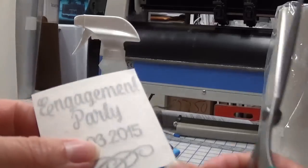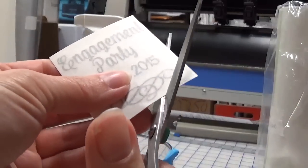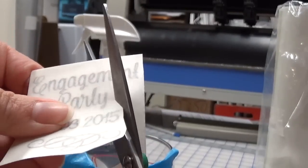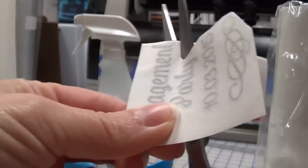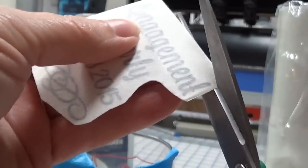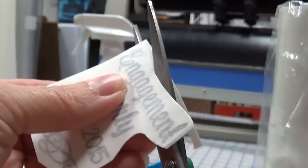When you get your decal, since we're going on a curved surface, I'm going to go ahead and trim this as close as I possibly can to give me some room to put this decal down as straight as I possibly can and without wrinkles in the letters. I'm going to trim around it.